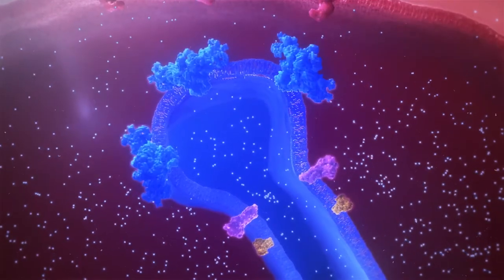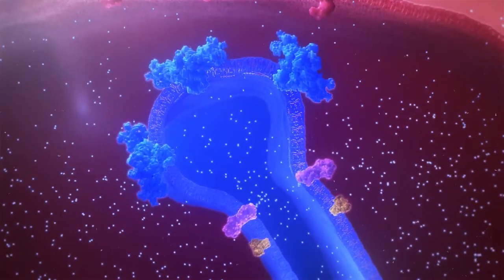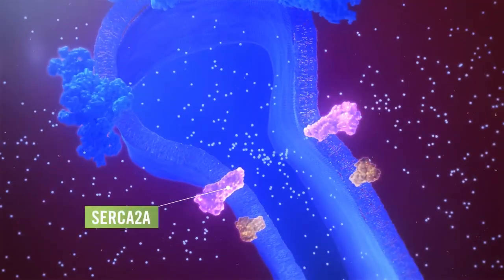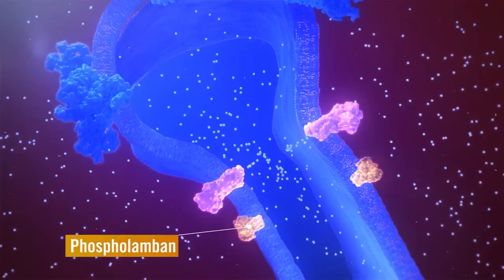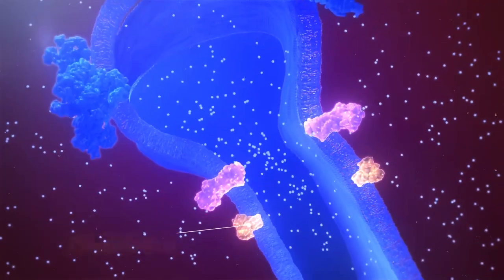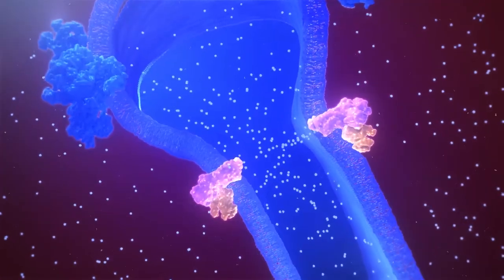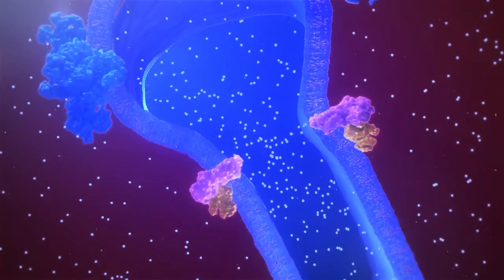This occurs due to the presence of the sarcoplasmic endoreticular calcium pump, or SERCA2a. Importantly, the activity of SERCA2a is regulated by the phosphorylation of phospholamban. When phospholamban is hypo-phosphorylated, it binds with SERCA2a, which reduces its ability to reuptake calcium, thereby reducing the amount of calcium available for contractions.